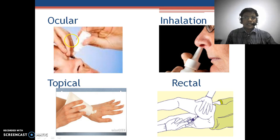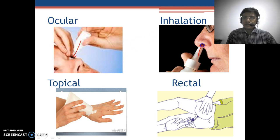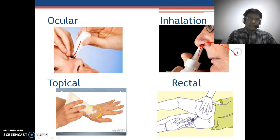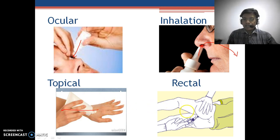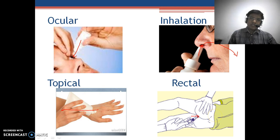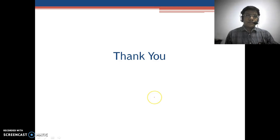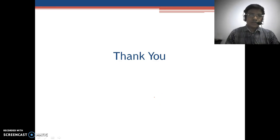These are some miscellaneous other examples: the ocular route, in which the drug is topically applied to the eye; the inhalation route, where the drug is inhaled through the nasal passage into the lungs; the topical route, where the drug is applied for local application to the surface of the body or skin; and the rectal route, where the drug is administered through the rectum using special devices.